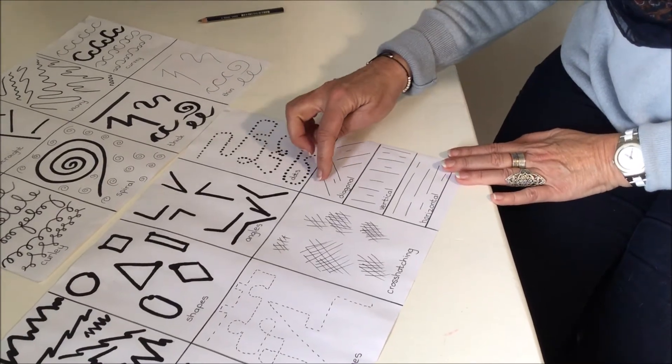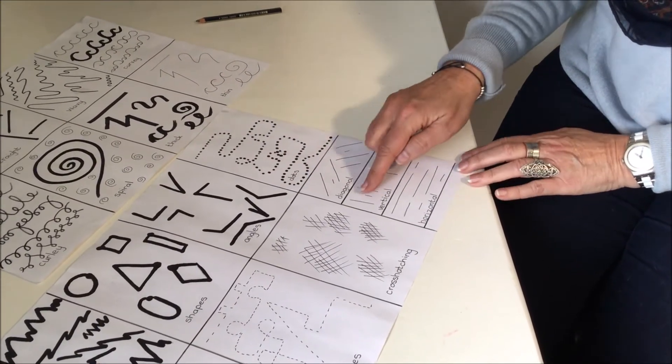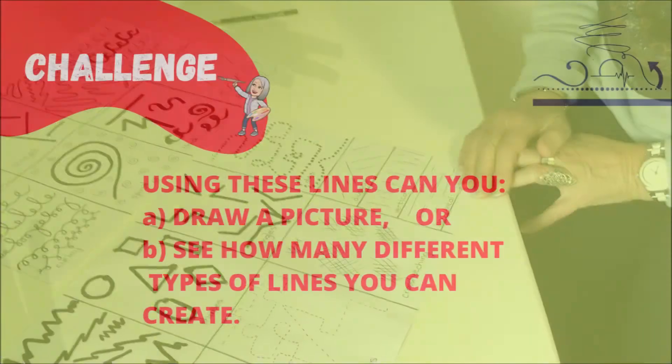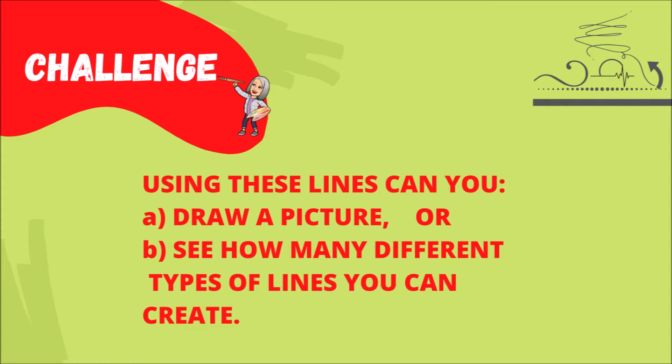And here we can have a good look at the diagonal line, the vertical line and the horizontal line. Using these lines, can you draw a picture or see how many different types of lines you can create from these examples.